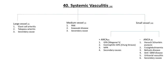Systemic vasculitis can also be associated with a wide variety of secondary conditions. According to the Chapel Hill Classification of 2012, systemic vasculitis is divided into large, medium, and small vessel categories.